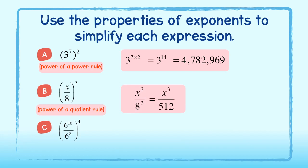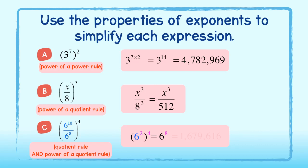And lastly, for c, we will be using more than one property to simplify. First, we use the quotient rule in parentheses and subtract 8 from 10 to get 6 to the second power raised to the fourth power. Next, we can apply the power of a power rule and multiply exponents to get 6 to the eighth power. Simplified, this is 1,679,616.